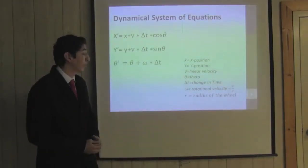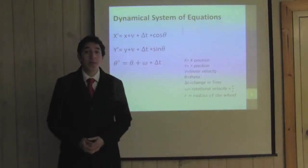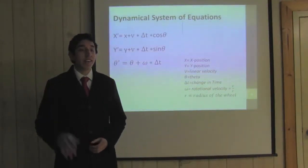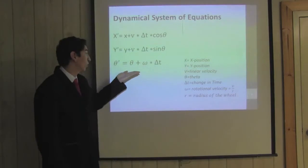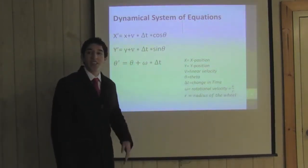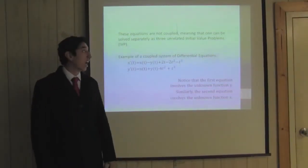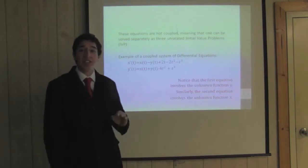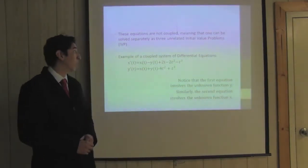This dynamical system of equations describes the motion of the car in order to get to a desired location. The theta in the third equation defines how much the car will rotate in order to make a turn. These equations are not coupled, meaning that they could be solved separately as three unrelated initial value problems.